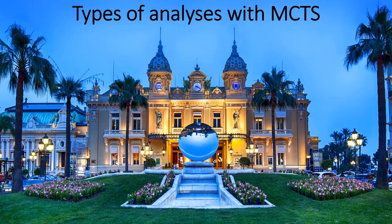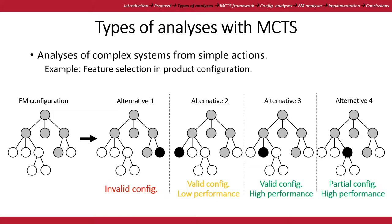What type of analysis can be done with Monte Carlo Tree Search? Some analyses include the analysis of complex systems from simple actions. For example, selecting a feature to be incorporated in a product is a very simple action to model, but analyzing how that feature contributes to the complete product is challenging due to existing relations and constraints. The selection may lead to an invalid configuration, a configuration with low performance, or a partial configuration that still needs to be completed.